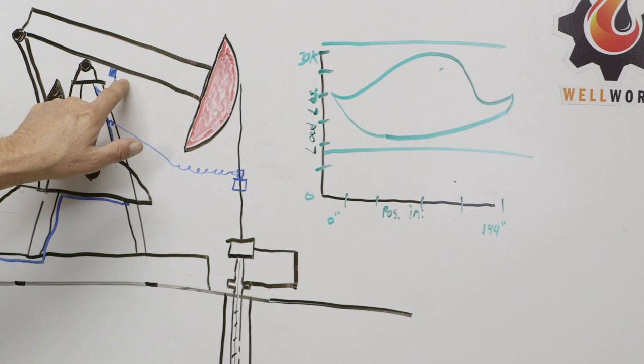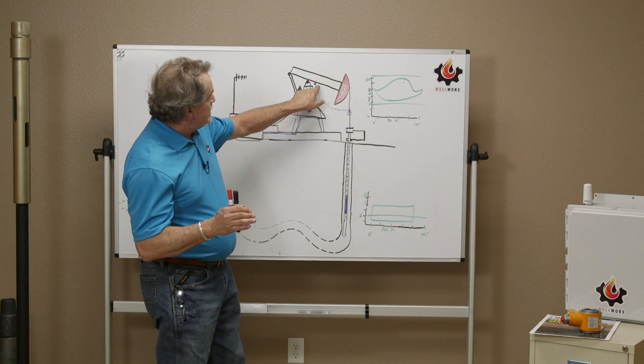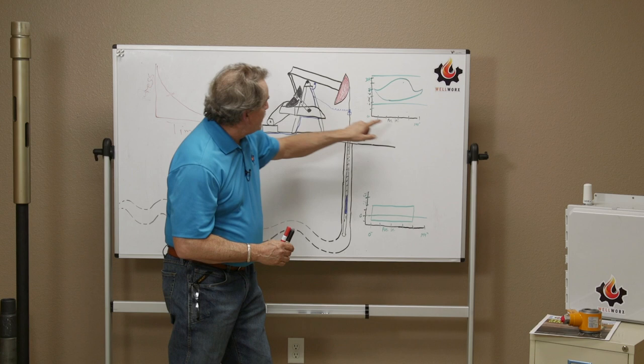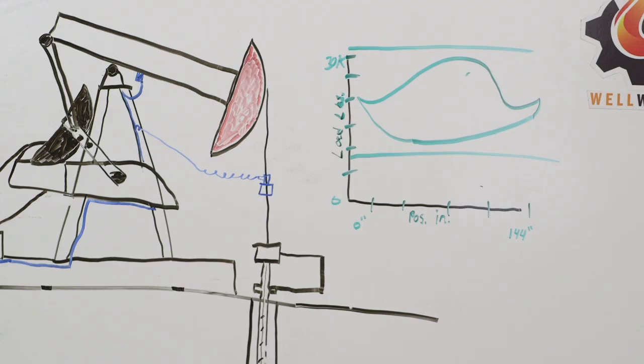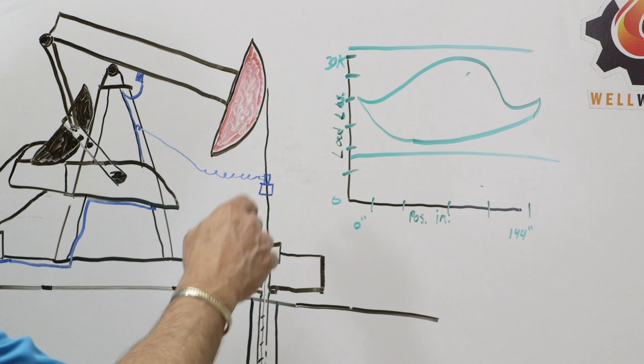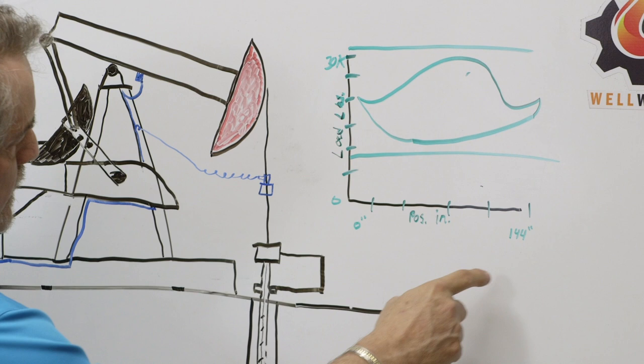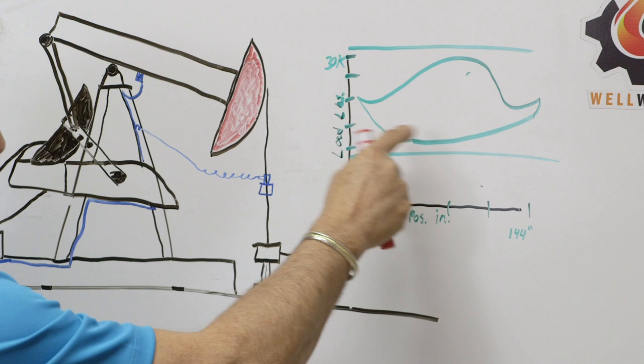We also, in this case, there's different position devices or ways to get position. But what we're interested in is, here on this scale, is what is the position of the polish rod relative to the load. In this case, and it's very common, we're using an inclinometer to tell us where the polish rod is. So we're measuring load. We plot that on this axis, position here, and then we're going to draw this dynograph card.